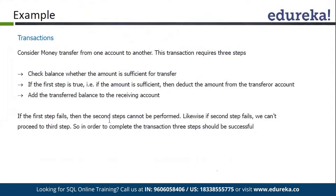For example, we have to transfer money from one account to another. In that case, first we check if the amount is sufficient in our account. If it is fine, we deduct the amount and transfer it to the next account. This is a process, a cycle that should go through in a transaction, so that if anything unexpected occurs, we can roll back and come back to our initial stage.